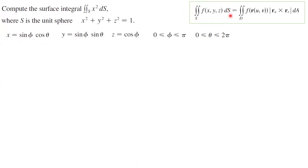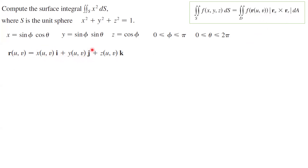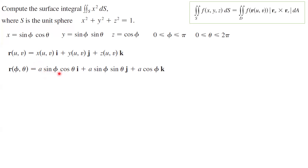The double integral of f dS can also be calculated as the double integral of f(r(u, v)) times the magnitude of the cross product between r_u and r_v, dA. Going back to parametrization, r(u, v) = x(u,v) i + y(u,v) j + z(u,v) k. Taking u = φ and v = θ, this is the parametrization for a sphere of radius a: a·sin(φ)cos(θ), a·sin(φ)sin(θ), and a·cos(φ). In this case, a = 1.